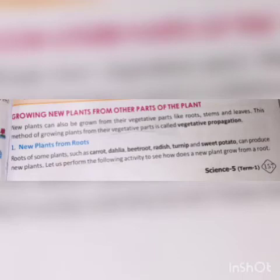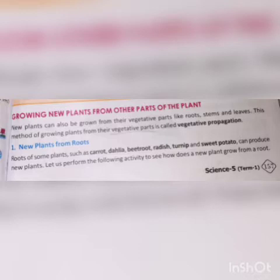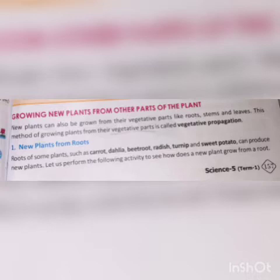In this class, we are learning how new plants grow from other parts of the plant. New plants can also be grown from their vegetative parts - like roots, stem, and leaves. This method of growing plants from the vegetative parts is called vegetative propagation.